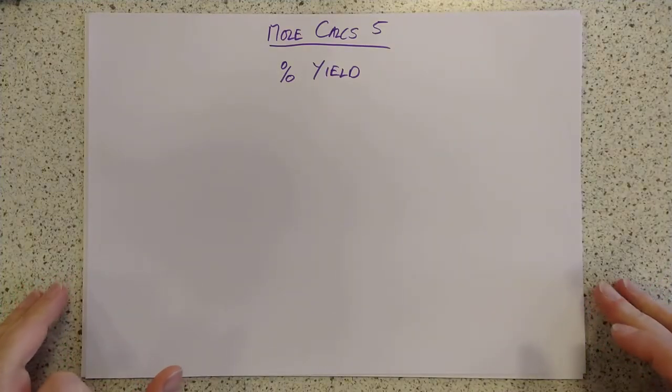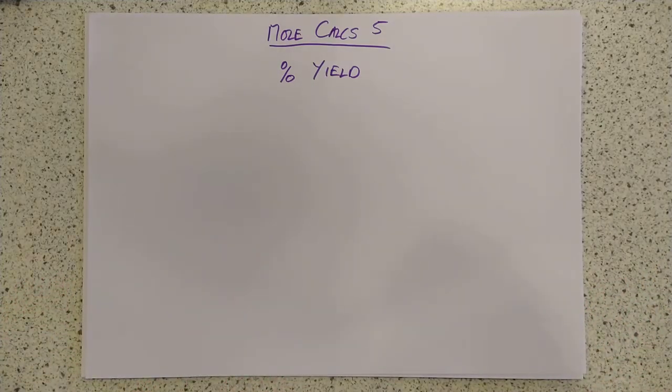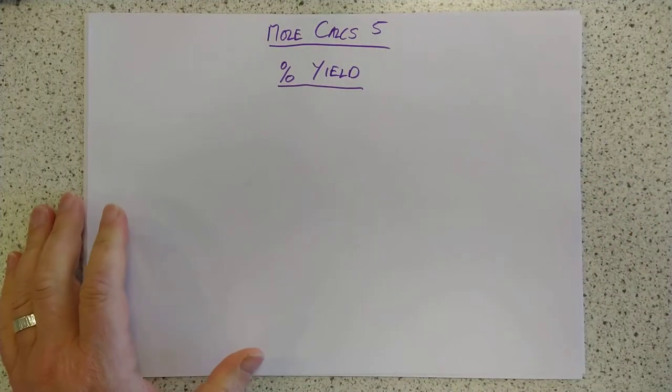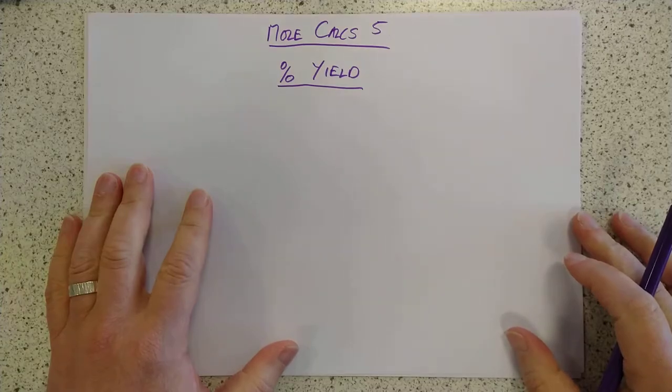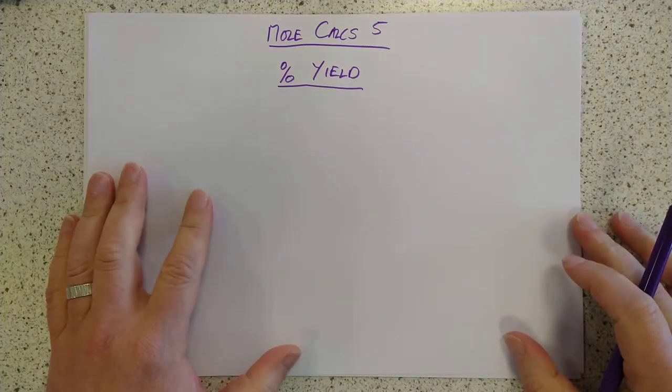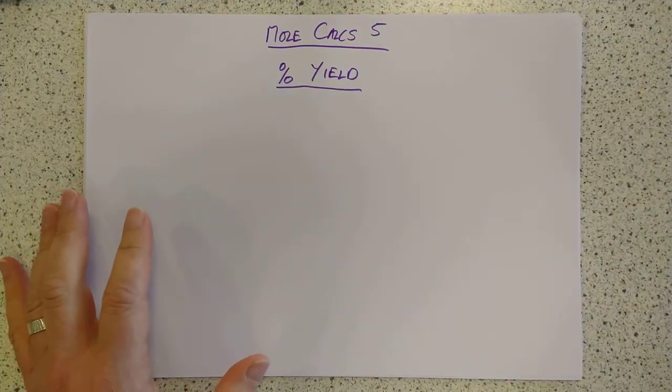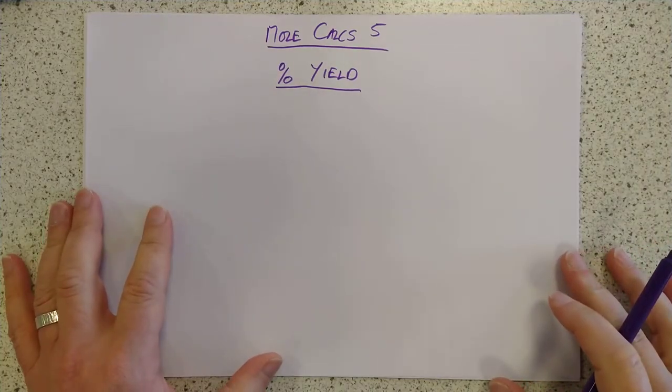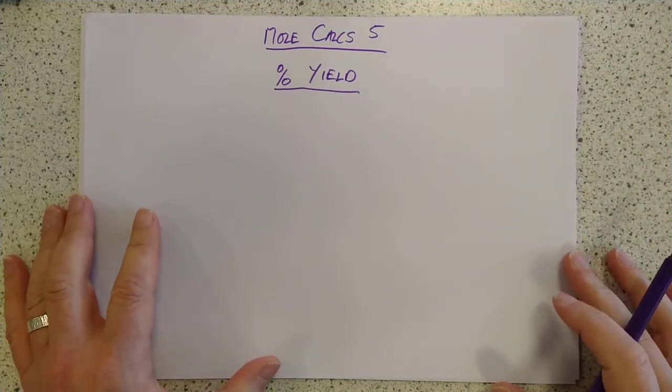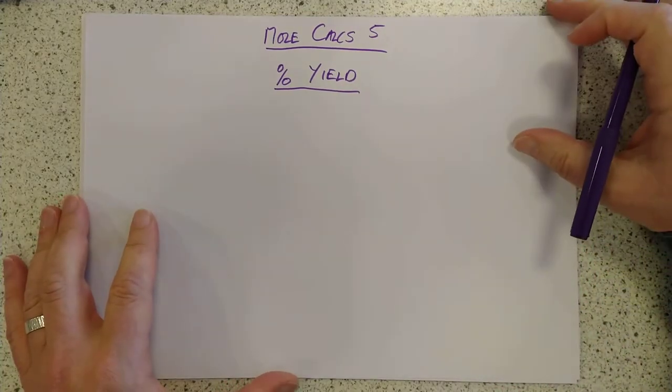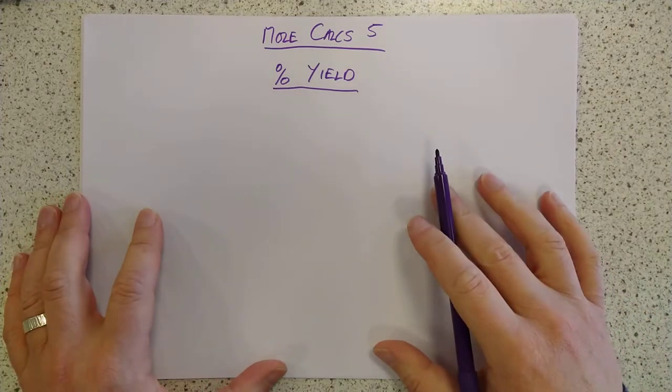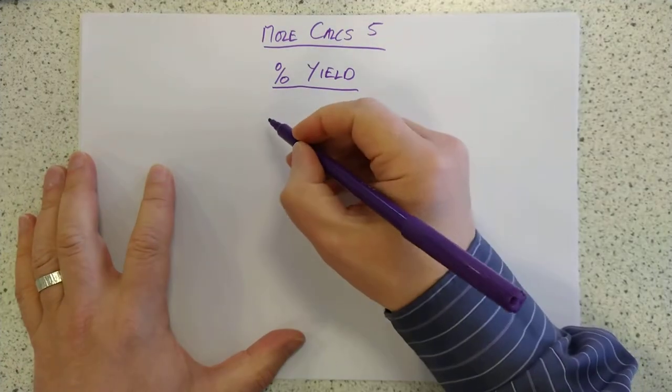Good afternoon folks, welcome to the world of mole calculations number 5. We're going to have a look at percentage yield today. What on earth is a percentage yield? Well, it turns out that almost all the time when you do a chemical reaction, you actually don't use up all of your reactants.